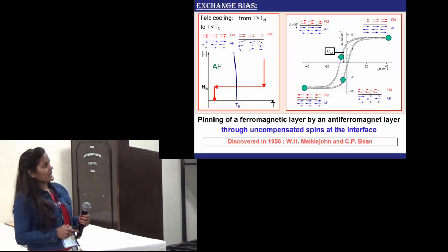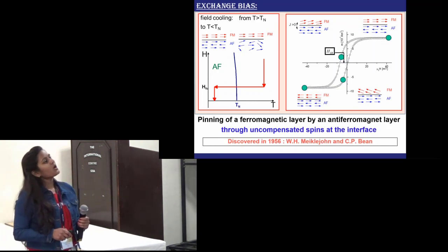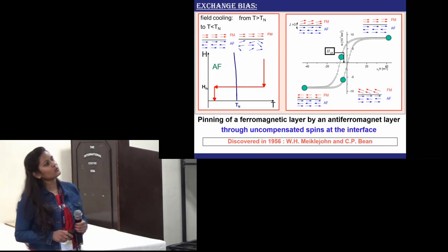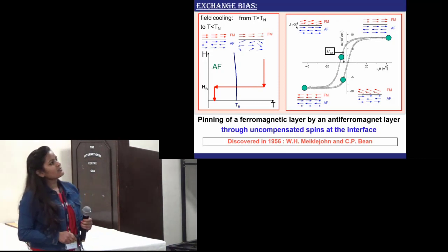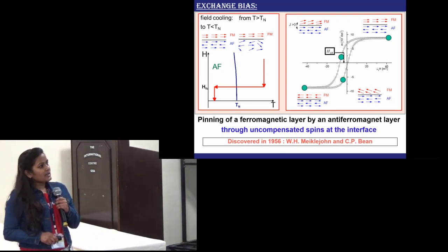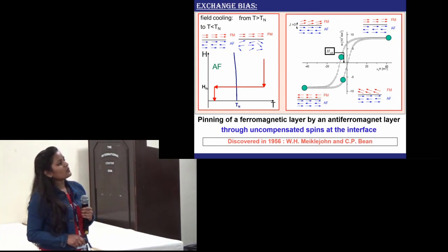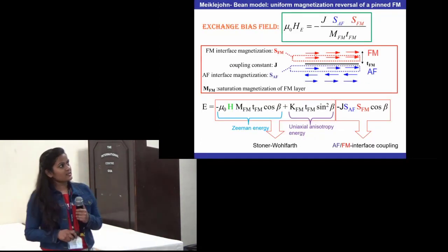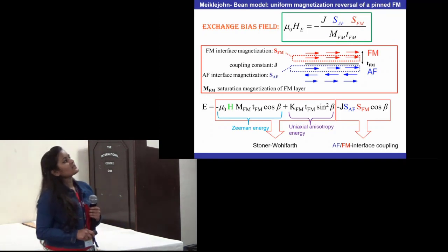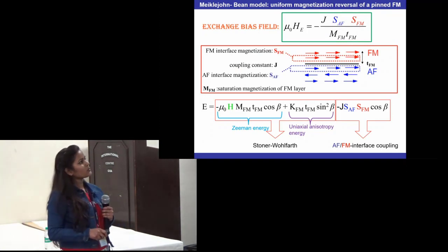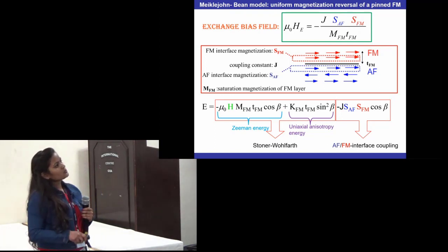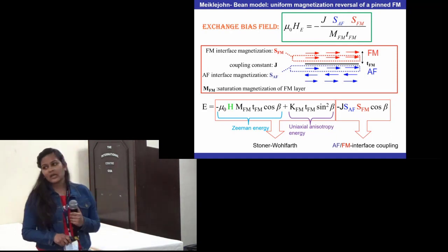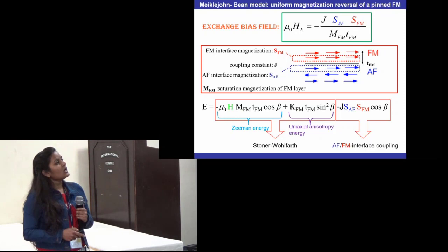First, let's understand what exchange bias is. Exchange bias refers to the shift of the hysteresis loop along the magnetic field axis when an antiferromagnetic/ferromagnetic bilayer system is field cooled below the Néel temperature of the antiferromagnetic layer. This shift occurs because of the pinning of the ferromagnetic layer by the antiferromagnetic layer through uncompensated spins at the interface. The phenomenon was first discovered by Meiklejohn and Bean in 1956. According to their model for uniform magnetization reversal of a pinned ferromagnetic layer, the exchange bias field is given by an equation derived from the total energy of the bilayer system, where the first two terms come from the Stoner-Wohlfarth model for the ferromagnetic layer and the last term comes from the antiferromagnetic/ferromagnetic interface coupling.